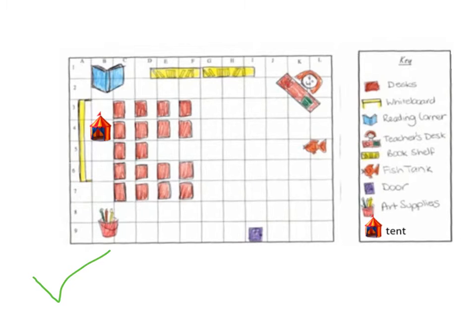And over here I've done up a key of different pictures and things that I've included in my grid map. I've got my student desk, the whiteboard, the reading corner, the teacher's desk, the bookshelf, the fish tank, the door, art supplies, and the tent. And I've drawn a little key symbol for each of those things and then put it over here into my grid map.